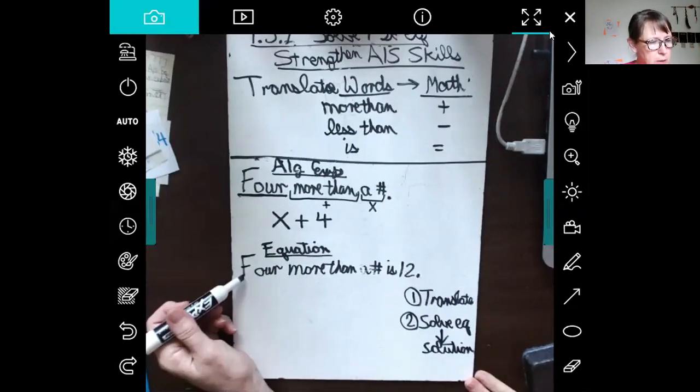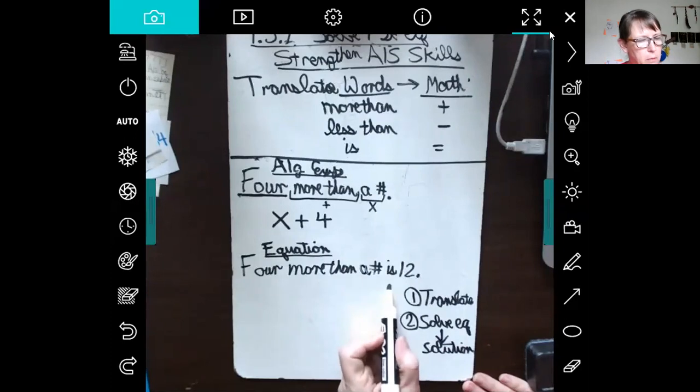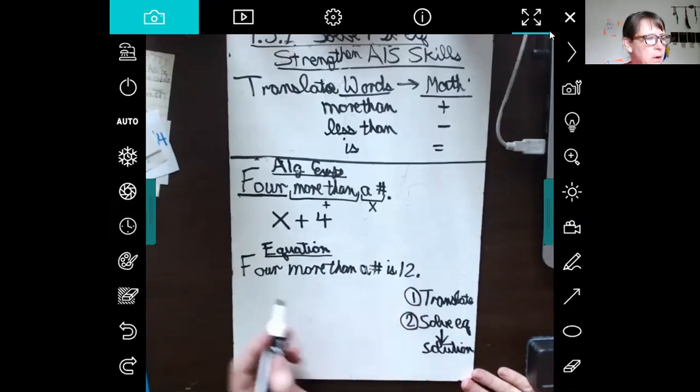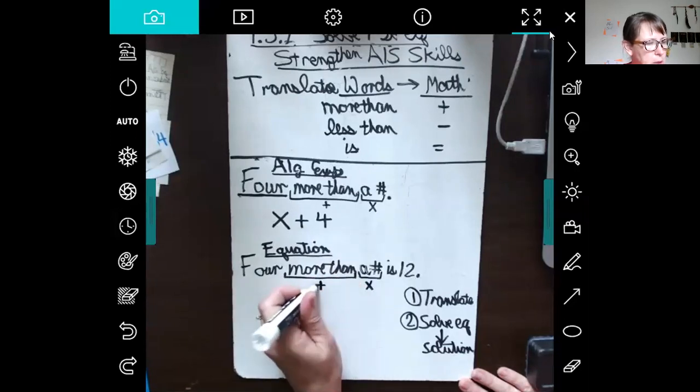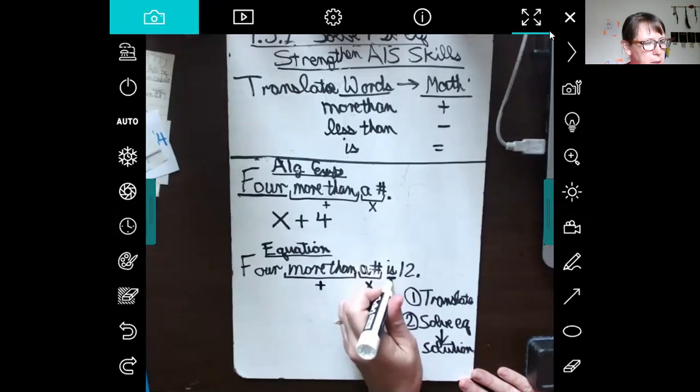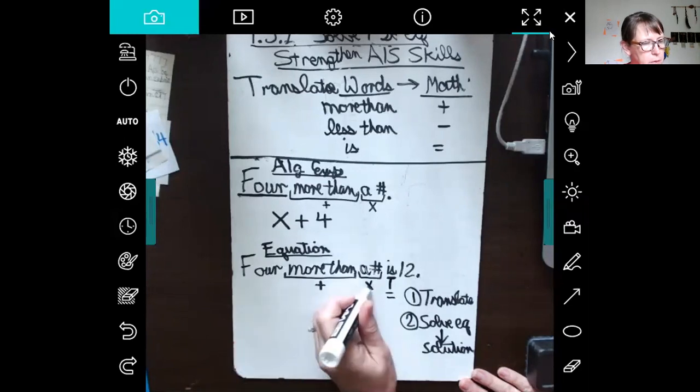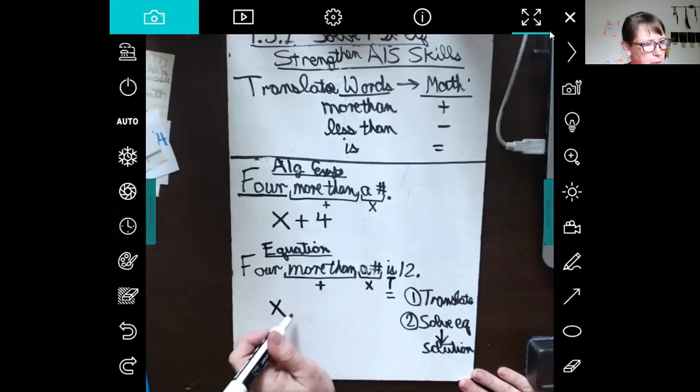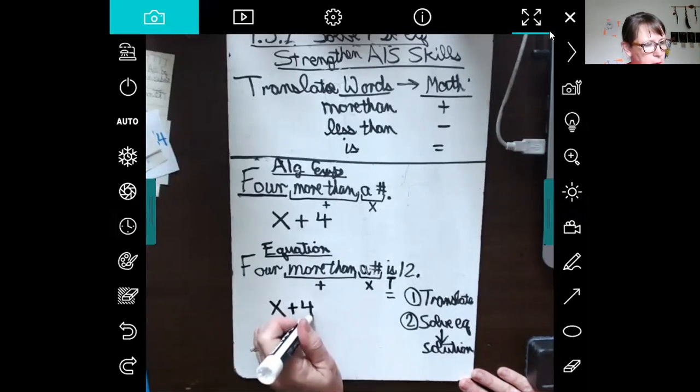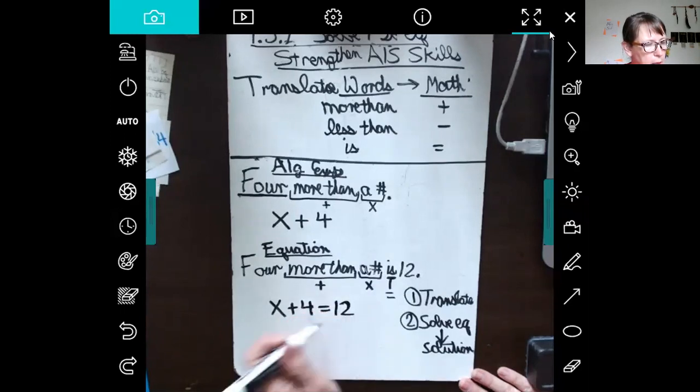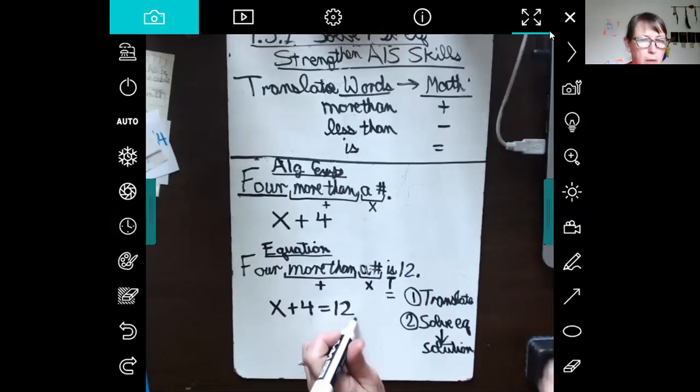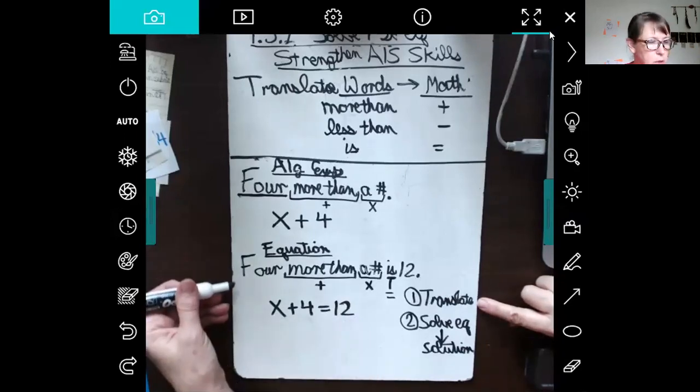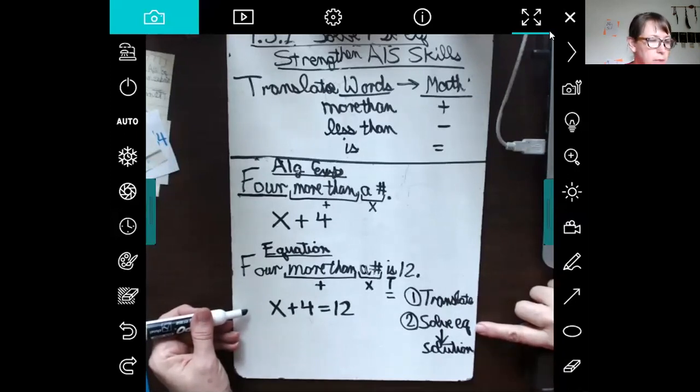Notice that I've chosen the same starting phrase: four more than a number. And the new part says 'is 12.' So we know that a number is our unknown, our variable. We know that 'more than' means addition. And then I've just reminded you that 'is' means equal. Starting with our unknown, a number, four more than a number is 12. And we have a mathematical sentence called an equation. It has two equal quantities: this quantity on the left and this quantity on the right. So we have completed the first step. We have translated our statement to an equation.